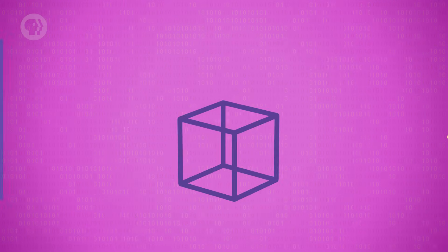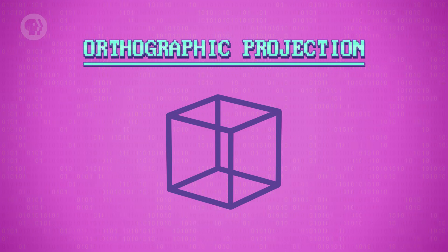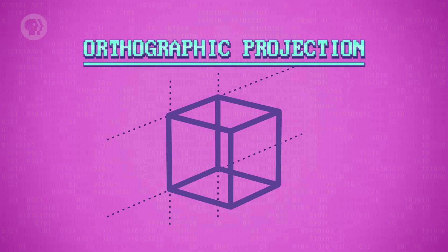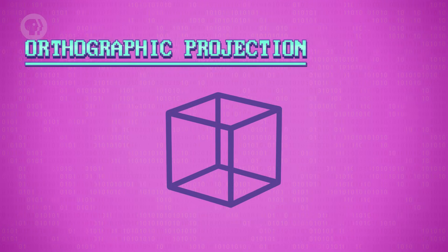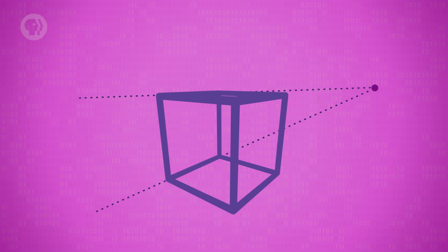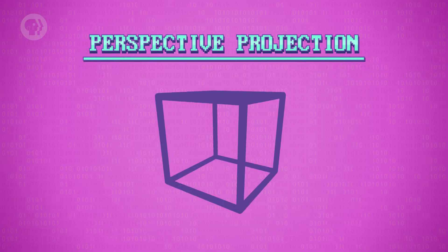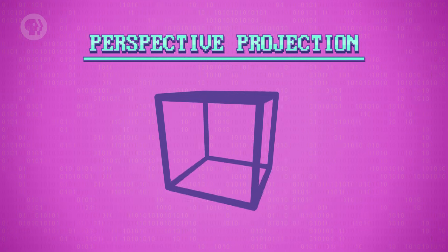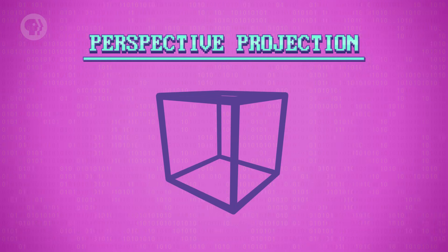There are several types of 3D projection. What you're seeing right now is an orthographic projection, where for example, the parallel sides of the cube appear as parallel in the projection. In the real 3D world, though, parallel lines converge as they get further from the viewer, like a road going to the horizon. This type of 3D projection is called perspective projection. It's the same process, just with different math. Sometimes you want perspective, and sometimes you don't – the choice is up to the developer.